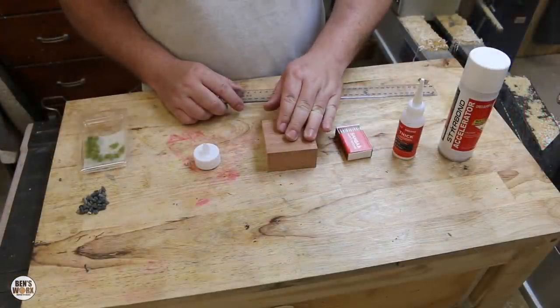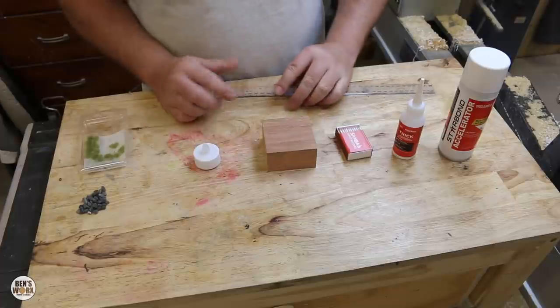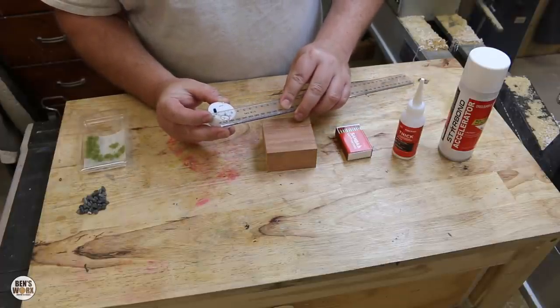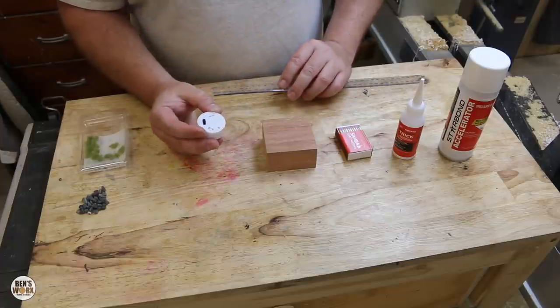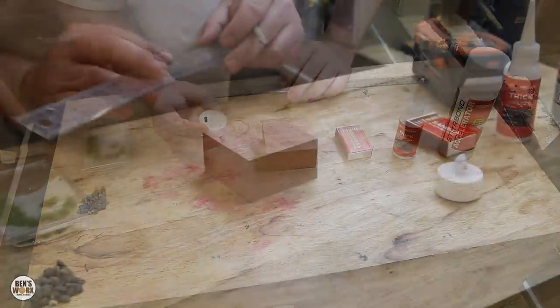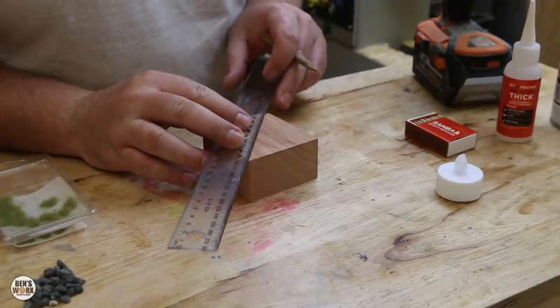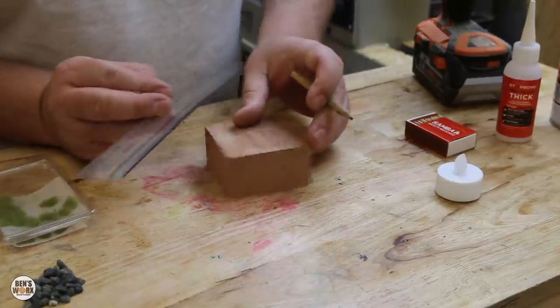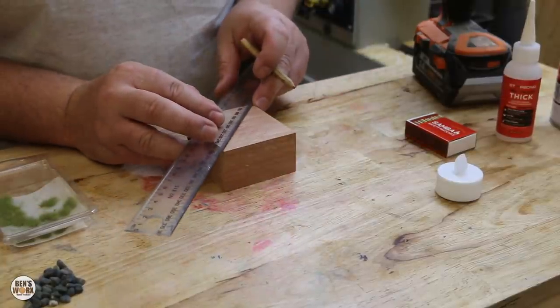So the first thing we need to do is drill a hole in the timber so we can put in the tea light candle. But before I do that, I'm just going to measure the candle, which is 38 millimeters. So I'll drill myself a 40 millimeter hole just so we've got a little bit of play. Before I drill my hole, I just need to find the center, so I'm just going to go from one corner to the other, do that both ways, and then it'll give me my center point.